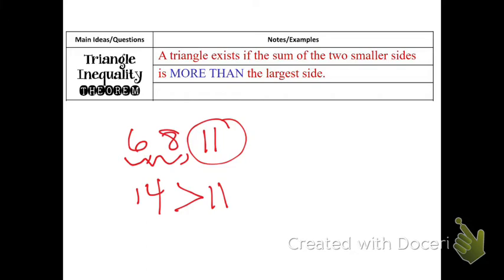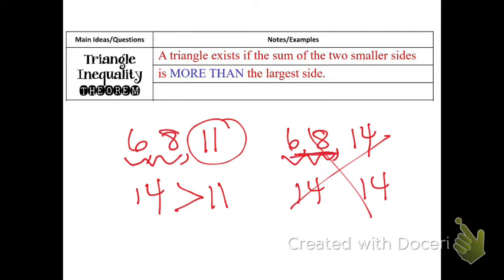However, if I had six, eight, and 14, now my two small sides are 14, that is not more than 14. It can't even be equal. It has to be more than the third side. This would not make a triangle. And if you think about it, if the two small sides are too small, then the third side just won't make it, it won't reach. So moving on.